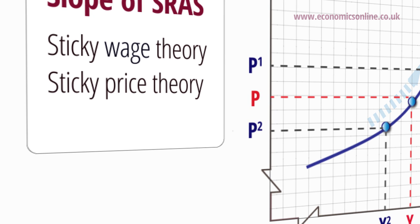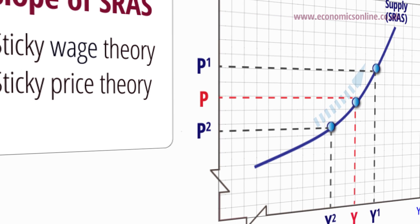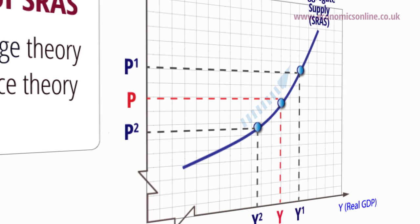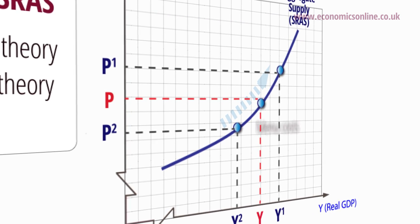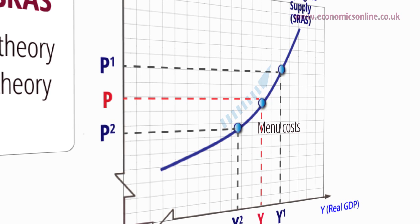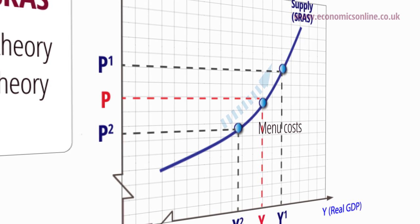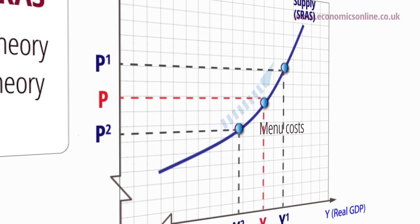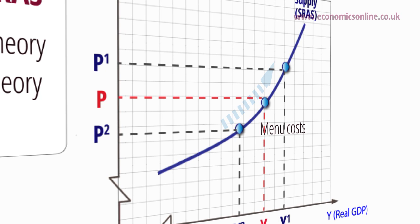Sticky price theory suggests that producer prices for some goods may be slow to adjust to changes in the general price level because there are costs to firms of changing prices, known as menu costs. So for example, a rise in the general price level not matched by an immediate rise in some firms' prices will cause these firms to be more competitive with an incentive to produce more. A fall in the general price level will make those producers with sticky prices less competitive, and they will cut back on production.